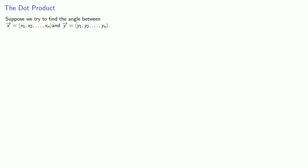Suppose we try to find the angle between two vectors. Using the law of cosines, we'll need to find the magnitude of one vector, the magnitude of the other vector, and the magnitude of the difference between the two vectors.